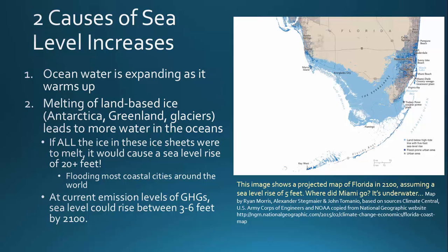At the current emission levels of greenhouse gases, the models estimate that the sea level would rise between three to six feet by the year 2100. So in less than 100 years, we can expect a sea level rise somewhere between three to six feet, accounting for a certain amount of melting and also expansion of water.